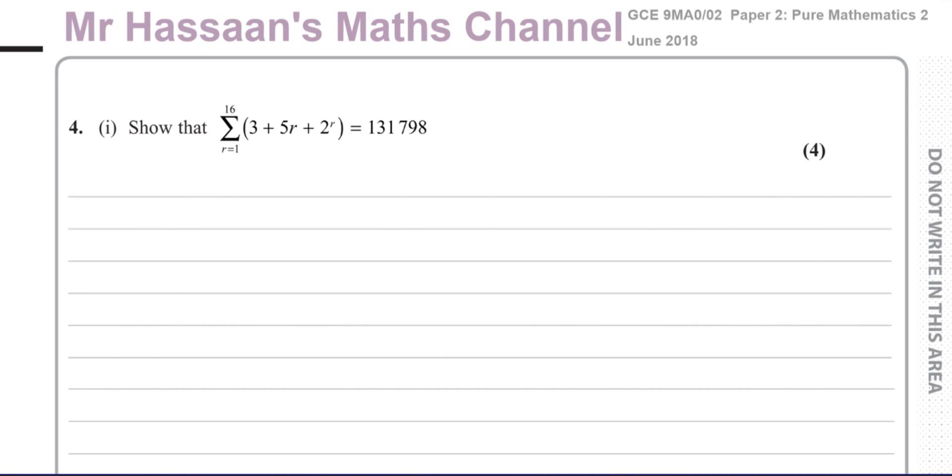It works like integration in a way, and differentiation, in terms of I can find the sum of these things separately. For example, let me take the sum of these. I can say let me take 3 plus 5R separately, because that's a separate type of series to 2 to the power of R.